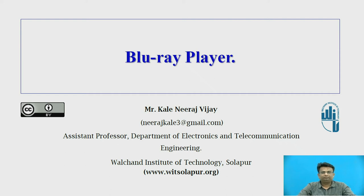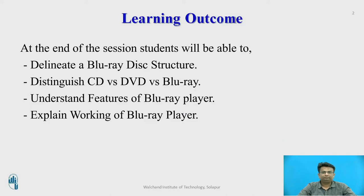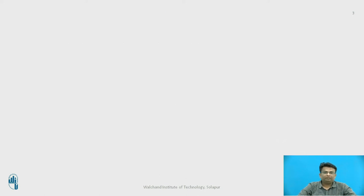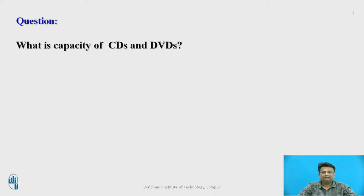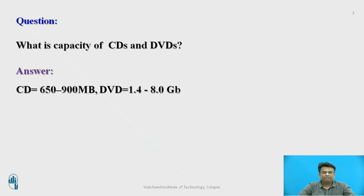Welcome to the session on Blu-ray Player. Before proceeding, let me ask you one question: What is the capacity of CDs and DVDs? You may pause the video, think about the question, write down your answer in your notebook, and resume the video to see the answer. The CD has a maximum capacity of 650–900 MB and the DVD has a capacity of 1.4–8 GB.